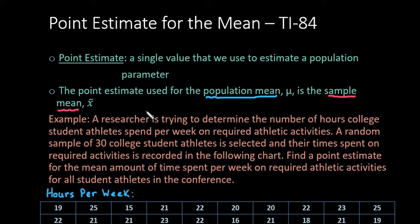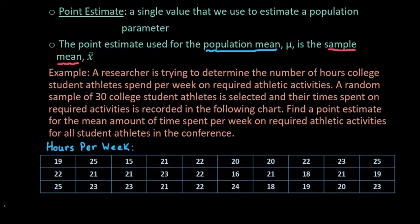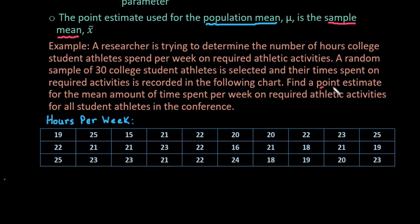A researcher is trying to determine the number of hours college student athletes spend per week on required athletic activities. A random sample of 30 college student athletes is selected and their time spent on required activities is recorded in the following chart. We want to find a point estimate for the mean amount of time spent per week on required athletic activities for all student athletes.